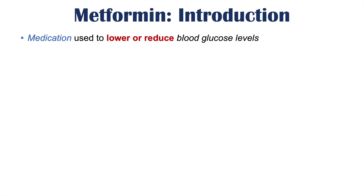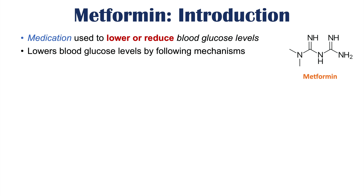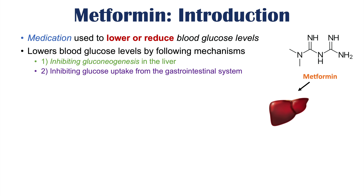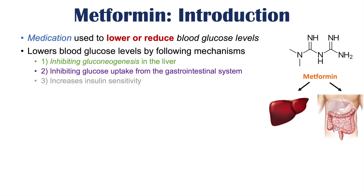Metformin is a medication used to lower or reduce blood glucose levels. It's not only used for diabetic patients, but it can also be used for other patient populations as well, including patients with polycystic ovary syndrome. It lowers blood glucose levels by several mechanisms: inhibiting gluconeogenesis in the liver, inhibiting glucose uptake from the gastrointestinal system, and increasing insulin sensitivity.